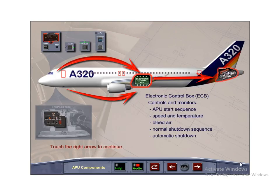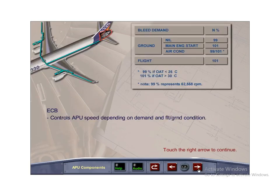The electronic control box, or ECB, controls and monitors all modes of APU operation, such as start, speed and temperature, bleed air, normal shutdown, and automatic shutdown. The ECB determines APU speed in accordance with the air bleed system demand and whether the aircraft is in flight or on the ground.